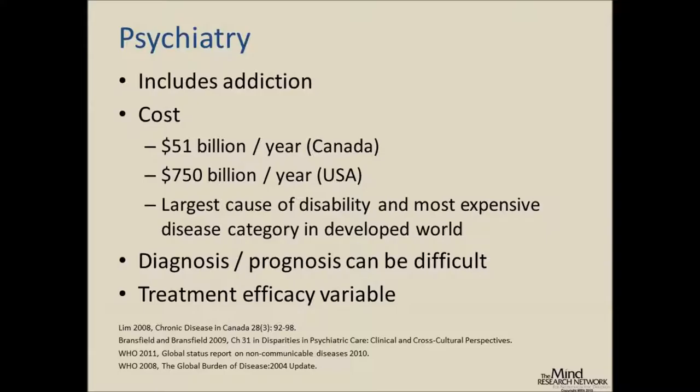It is an expensive and devastating set of diseases. In Canada, the estimate is $51 billion a year. Here in the US, the estimate is $750 billion a year — that's in direct and indirect costs. Psychiatric illnesses cause things like homelessness, suicide, and crime. And in fact, it's the largest cause of disability and the most expensive disease category in the developed world, according to the World Health Organization. This is more expensive than heart disease, and more expensive than cancer as a set of diseases.